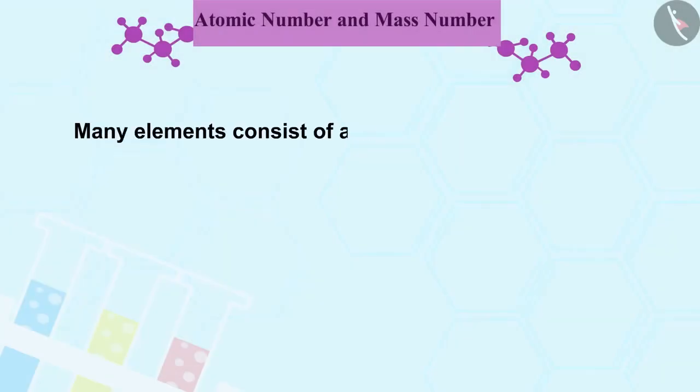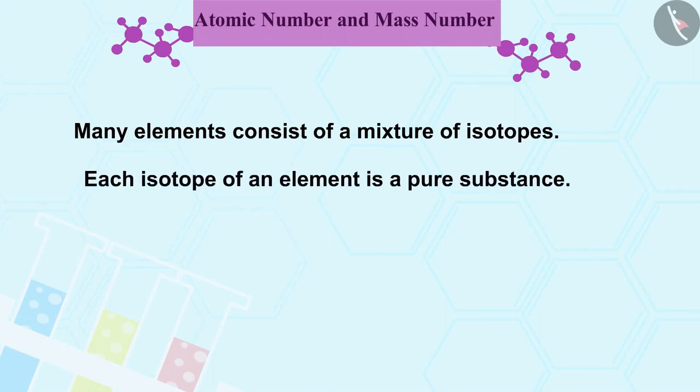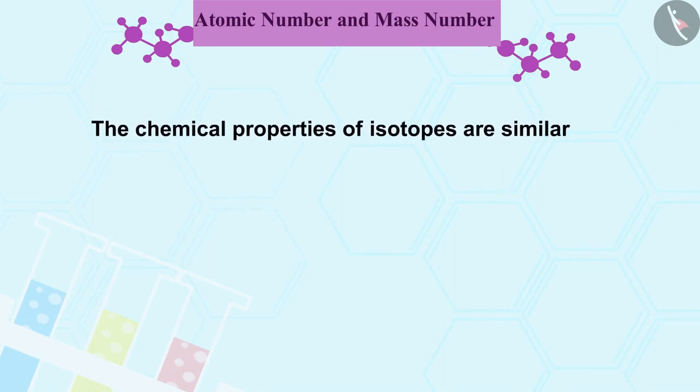Many elements consist of a mixture of isotopes. Each isotope of an element is a pure substance. The chemical properties of isotopes are similar but their physical properties are different.